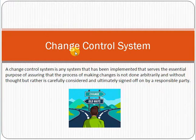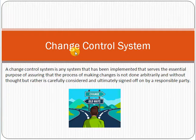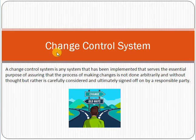For example, if you are already using a mobile attendance system app and a new feature is coming, before adding that feature to production you need proper sign-offs from the authorities and proper testing. Without all these approvals and testing, you cannot implement that change at production. The term change control system means a mechanism to handle, control, and manage a change.